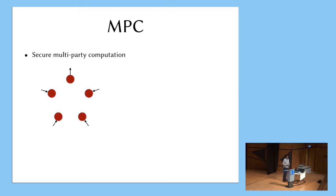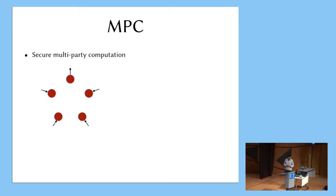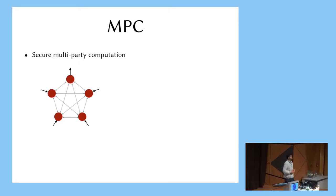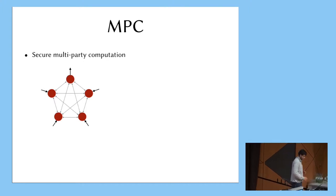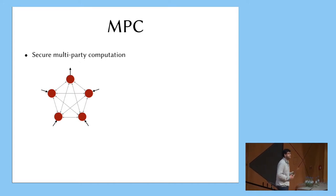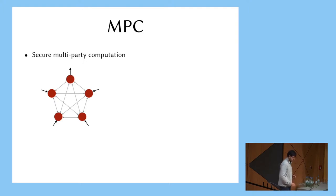There are a bunch of parties. They all have inputs, and they may all want to compute some functions, so they could all potentially get outputs. To compute this function on their inputs, they run a protocol — they talk to each other — and the requirement is that they should learn nothing other than their own inputs and the outputs of the function. Whatever else they see in the protocol could have been simulated.